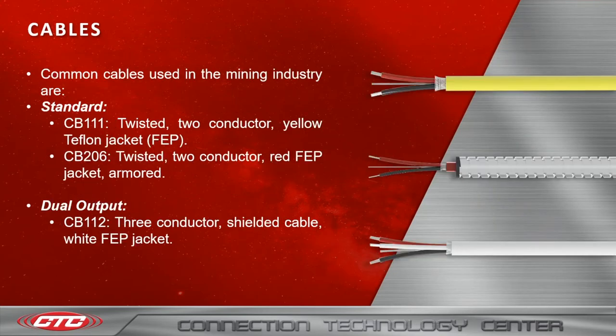That brings us to cables, which come in standard and dual output types, and are commonly used in the mining industry. For the standard cables, we have the CB-111, which is a twisted two-conductor yellow Teflon jacket, also known as FEP.